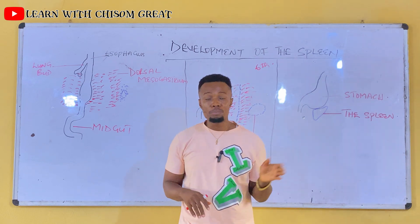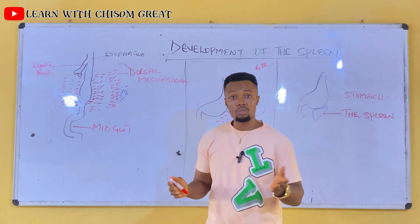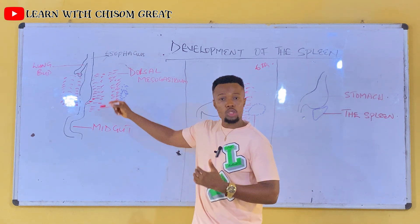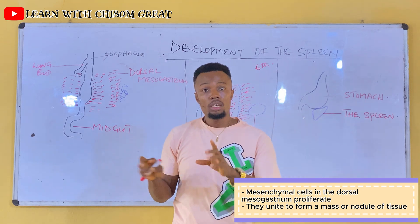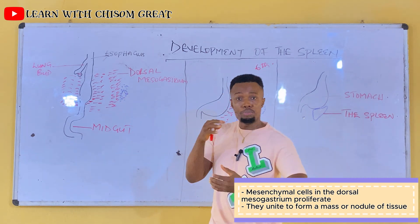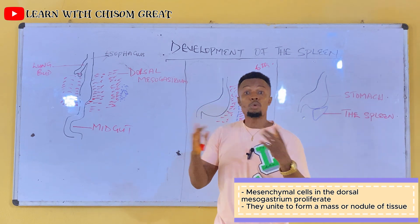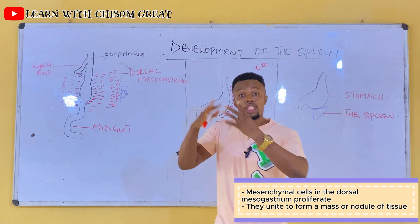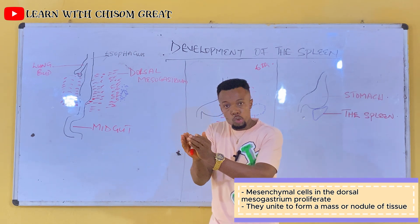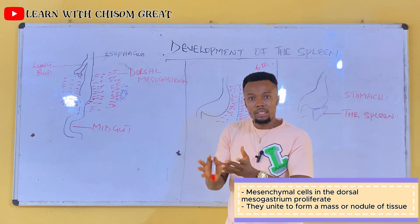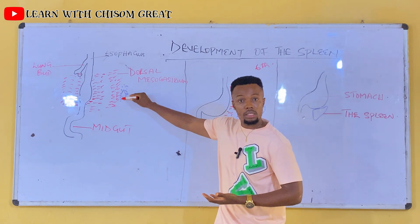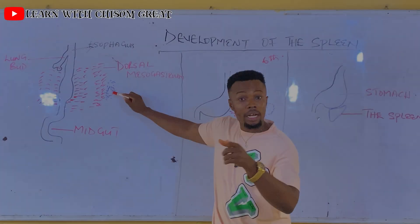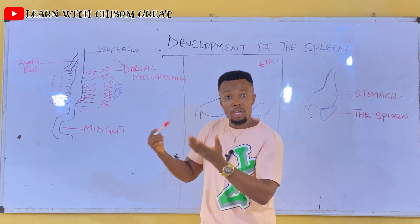The spleen begins to develop at the sixth week. At the sixth week, you notice that in the dorsal mesodersum, some mesenchymal cells begin to proliferate — they begin to multiply. And as they multiply, they begin to come together to form a mass. So these are mesenchymal cells surrounding the dorsal mesodersum, and you can see how they are coming together to form a mass.